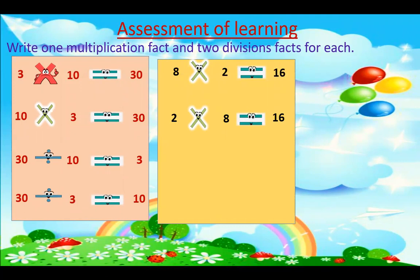The second question: the multiplication fact is 2 times 8 is equal to 16. And the division facts are 16 divided by 2 is equal to 8, and 16 divided by 8 is equal to 2.